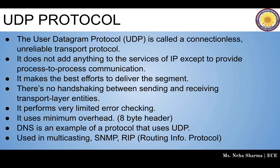In UDP, your message is divided into small packets, and those packets are known as datagrams. The User Datagram Protocol (UDP) is a connectionless and unreliable transport protocol. It does not add anything to the service of IP except to provide process-to-process communication. It makes the best effort to deliver the segment. There is no handshaking between sending and receiving transport layer entities, so if a segment is not received it can be labeled as lost since there is no acknowledgement. It performs very limited error checking.